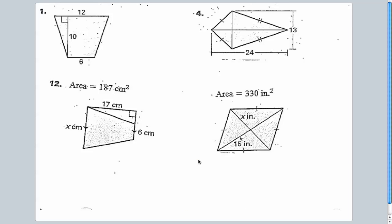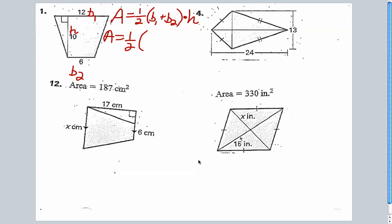Number one: I've got a trapezoid. The formula for a trapezoid is A equals one-half times (B1 plus B2) times the height. The height is 10, B1 is the top base, B2 is the bottom base. So A equals one-half times (12 plus 6) times 10. A equals 90. That's a straightforward application of the trapezoid formula.